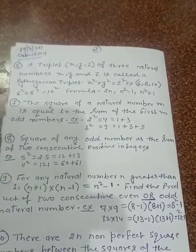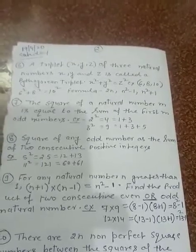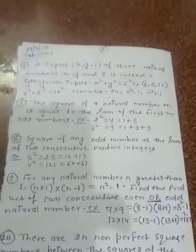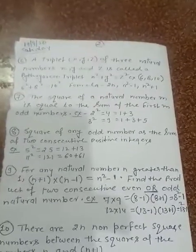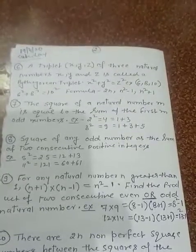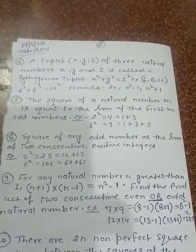Now, 11². Square of 11 is equal to 121. Here we take 60 and 61 only. Why? Because 60 and 61 are 2 positive integers.